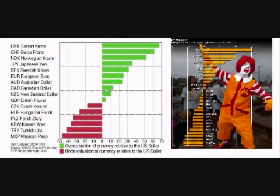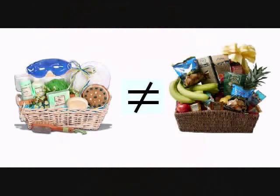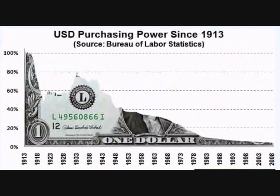It is interesting to note that when comparing the Big Mac Index to the actual purchasing power parity chart, they are strikingly similar. Like all economic theories, the purchasing power parity has its problems. The first is that it is difficult to find a set of items to compare prices between countries, because people in different countries typically consume different goods.